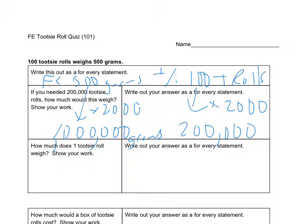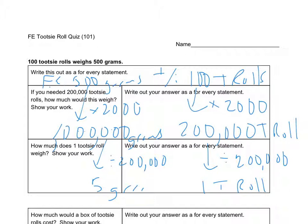And then it says, how much does 1 Tootsie Roll weigh? All right. So we're dividing by 200,000 here. So that will give me one Tootsie Roll. I'm going to divide by 200,000 here. And this will be five grams.